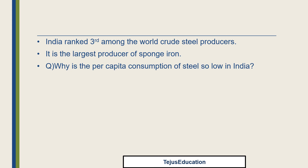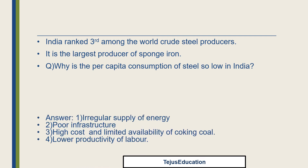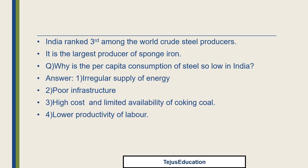Why is the per capita consumption of steel so low in India? The reasons are: irregular supply of energy, poor infrastructure, high cost and limited availability of coking coal, and lower productivity of labor. You have to elaborate these points to get full marks.